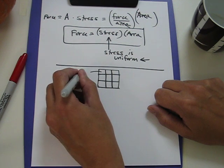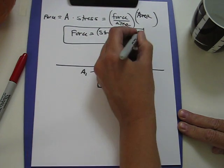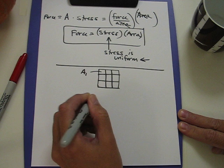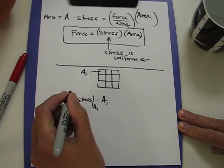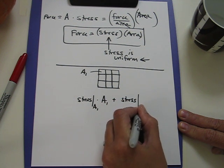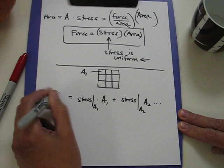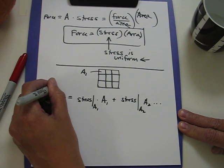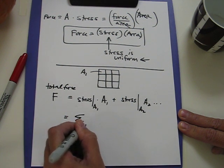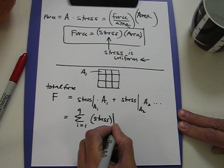For each of these little pieces — say a1, a2, a3, all the way across — we need to calculate the stress and multiply it by the area. So we need the stress at position a1 times area a1, and we need to add the stress at a2 times a2, et cetera, and add them all up to get the force on the total surface. We can think of this as a sum: for i equals 1 to 9, of stress at the i-th surface.